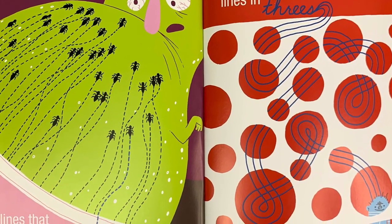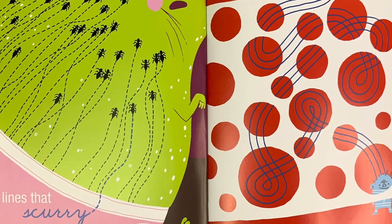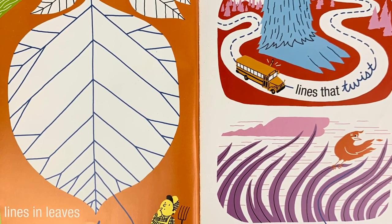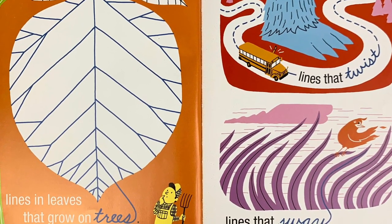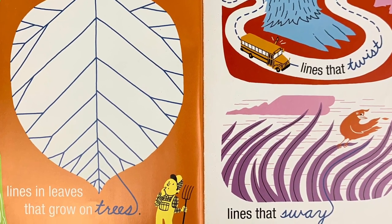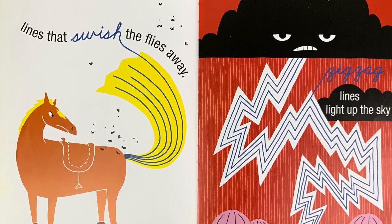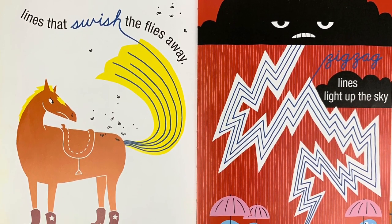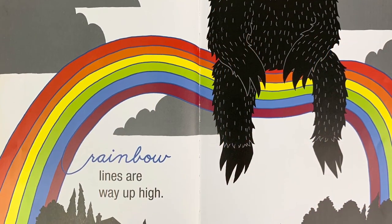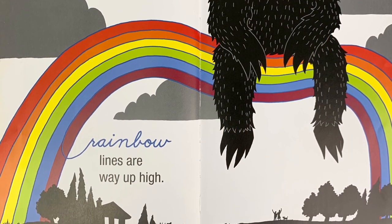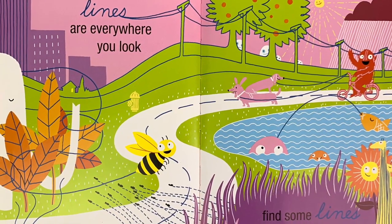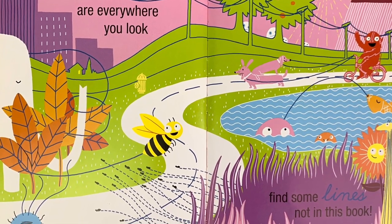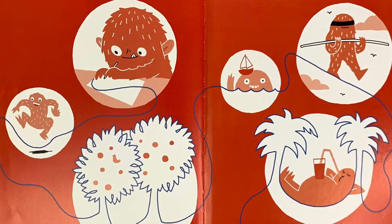Lines that curve, lines that curl. Underwater lines that swirl. Lines that criss-cross, lines that mend. Lines with doggies at the end. Lines that scurry, lines in threes. Lines in leaves that grow on trees. Lines that twist, lines that sway. Lines that swish the flies away. Zigzag lines light up the sky. Rainbow lines are way up high. Lines are everywhere you look. Find some lines, not in this book. The end.